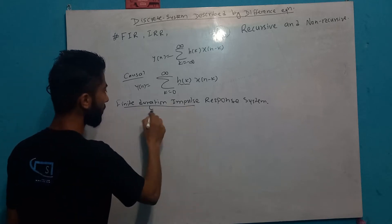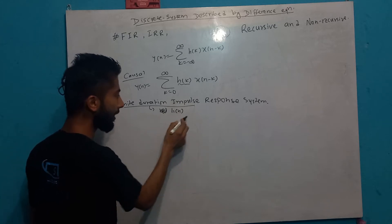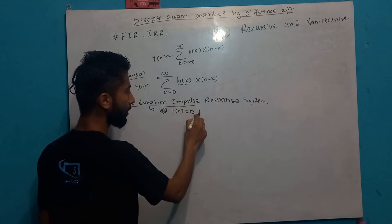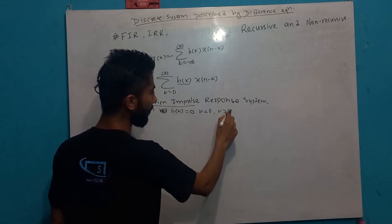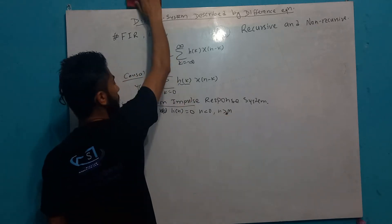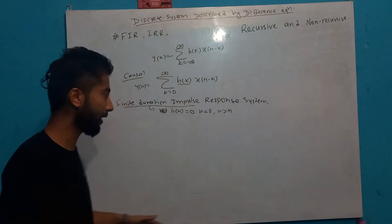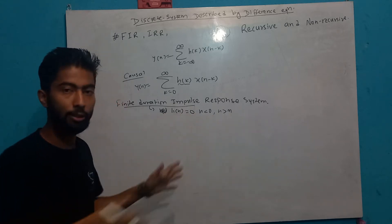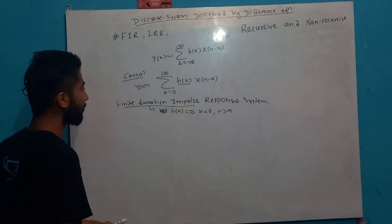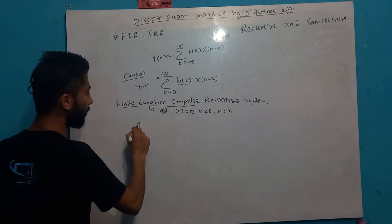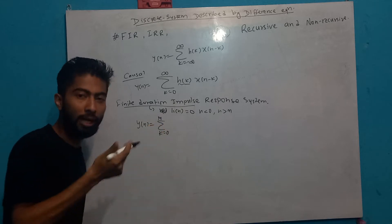This means that h[k] should be equal to 0 for k less than 0, and also for k greater than or equal to N. This means it is a fixed finite length — h[k] ranges from 0 to N, giving a finite duration impulse response.